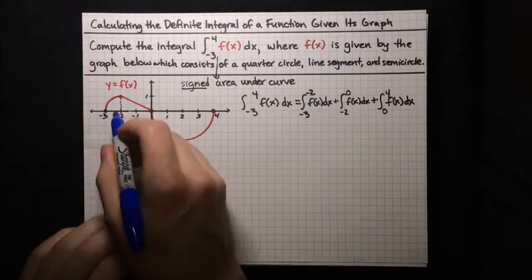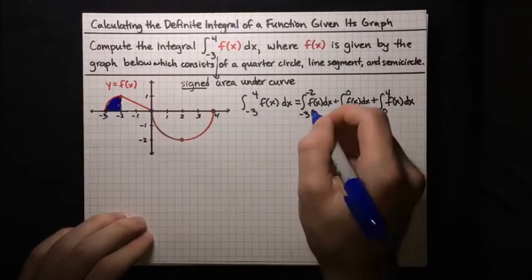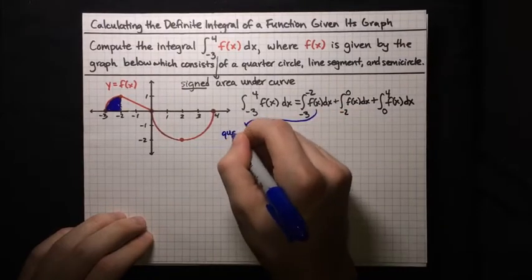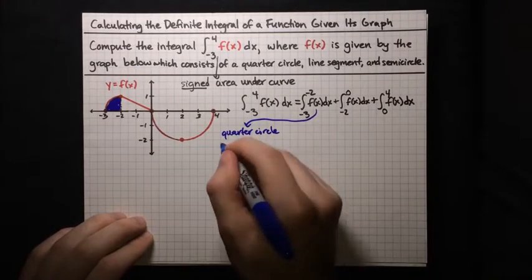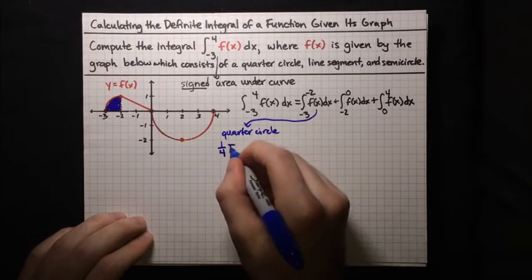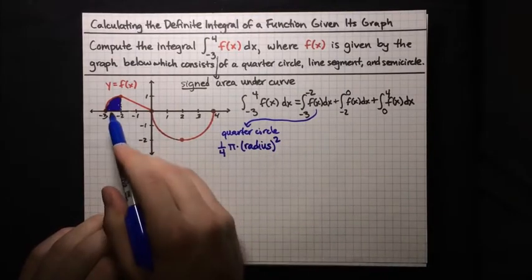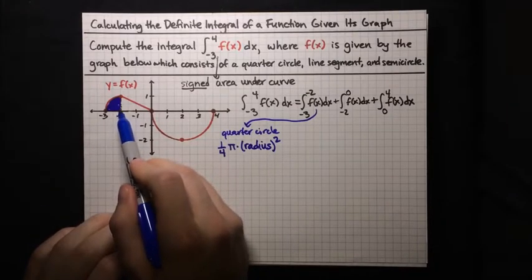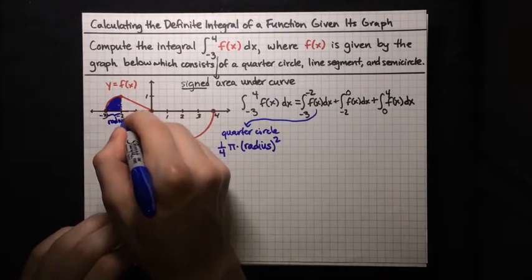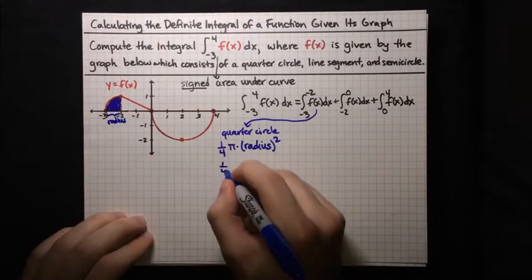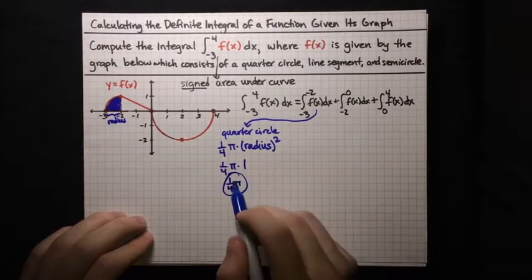The first integral, from negative 3 to negative 2, corresponds to this quarter circle. The area of a quarter circle is one-fourth the area of a full circle, which is one-fourth times π times r². The center of the circle is at negative 2 and the end is at negative 3, so the radius is 1. So one-fourth times π times 1² equals π/4. That is the value of the first integral.